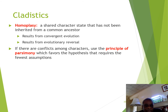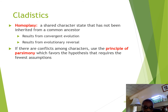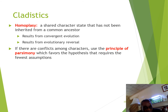Another concept to think about is homoplasy — a shared character trait that has not been inherited from a common ancestor, arising instead as a result of convergent evolution or evolutionary reversal. The bird wing and bat wing is a good example of a shared character state resulting from convergent evolution.